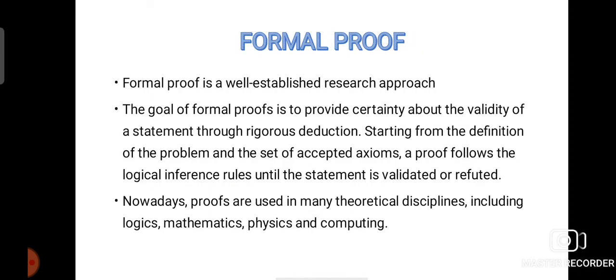Now let us see about formal proof. Formal proof is a well-established research approach. The goal of using formal proof is to provide certainty about the validity of a statement. We will start with the definition of the problem and use a set of accepted axioms. A proof follows the logical inference rules, and we will infer through the rules until the statement is validated or refuted.